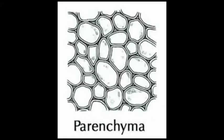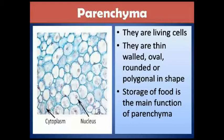Now we are going to learn about parenchyma. The parenchyma tissues are the only living tissues in all plants, and they are present in most plants. They are thin-walled, oval, rounded, or polygonal in shape, with well-defined intercellular spaces.